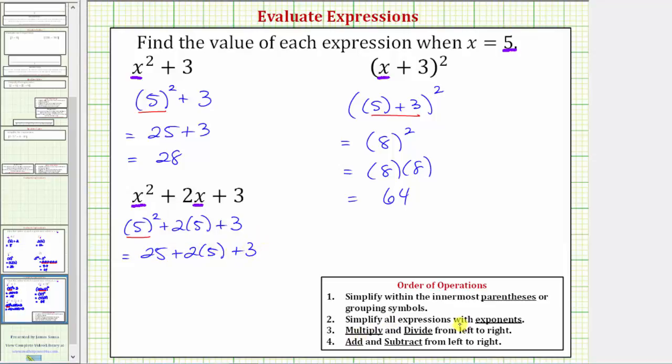Step three, we multiply and divide from left to right. So now we find this product. Two times five equals 10. 25 plus 10 plus three. And of course, the last step is to find the sum. 25 plus 10 is 35 plus three equals 38.